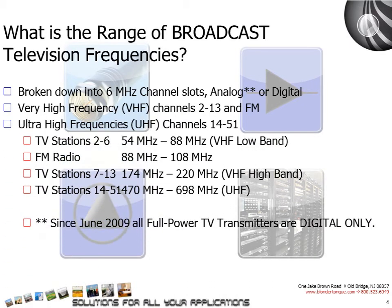Television stations 2 through 6 cover the 54 to 88 MHz range, which is the VHF low band. Then FM radio covers the 88 to 108 MHz range. Television stations 7 through 13 are 174 MHz to 220 MHz, the VHF high band. And finally, television stations 14 through 51 encompass 470 MHz through 698 MHz, the UHF frequency range.